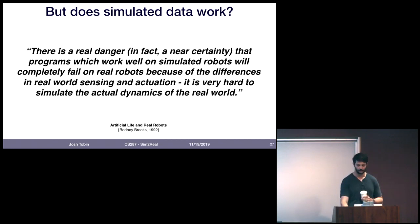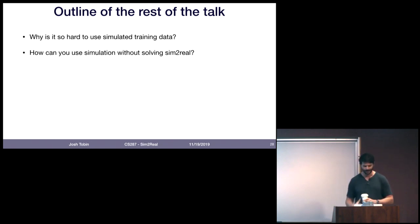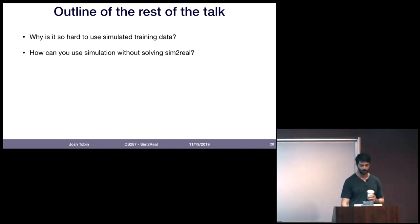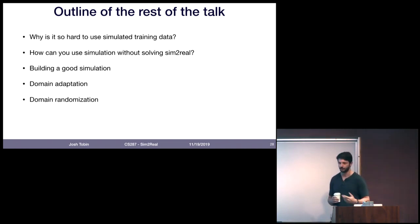Here's what I'm going to talk about for the rest of this talk. First, an intuitive sense of why it's so hard to use simulated training data — why we have a gap between simulation and the real world. Then briefly, how you can use simulation to help build robot systems even without solving the sim-to-real problem. Then some ways to build a good simulation. Then techniques to bridge the gap: domain adaptation and domain randomization, which I'll have the most to say about. And finally, some thoughts on what's next for this field.